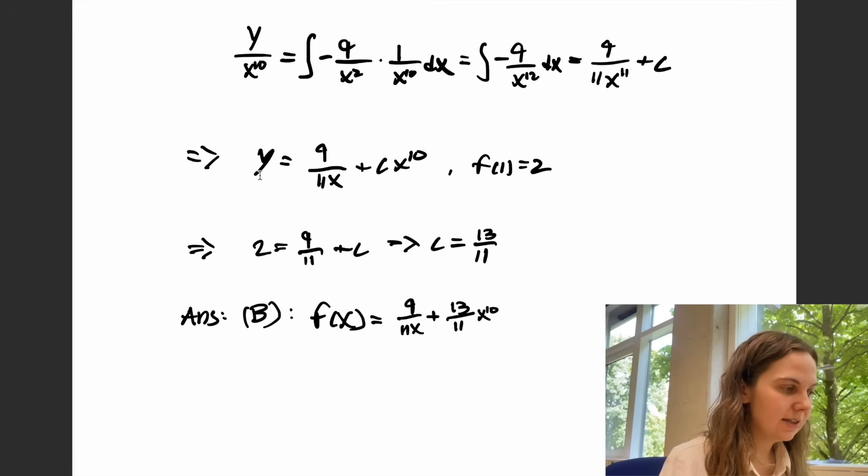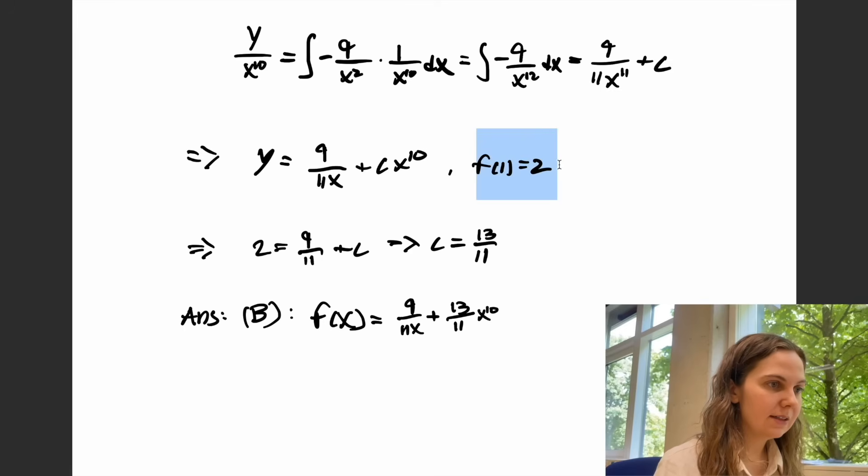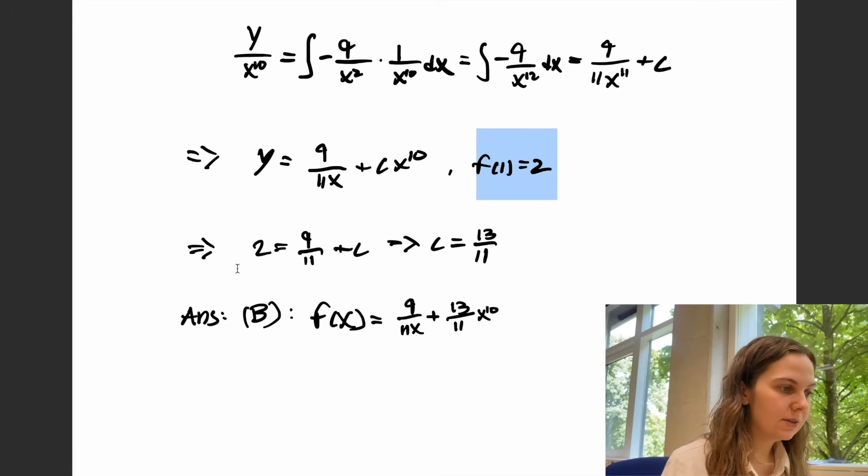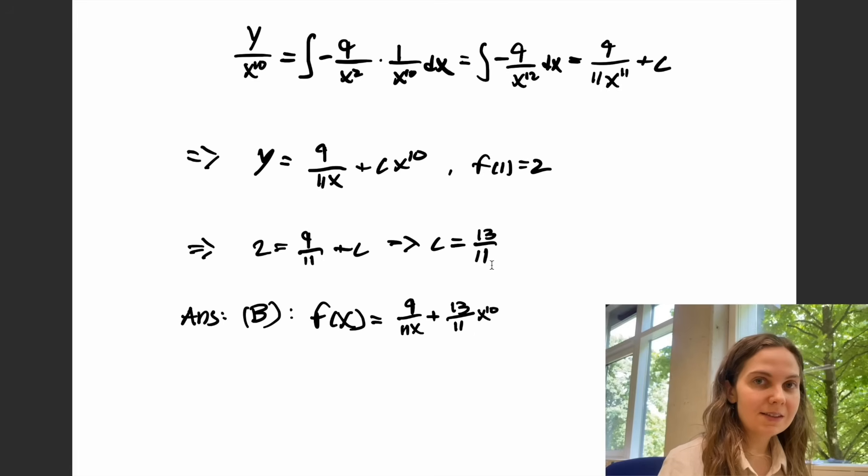We can work out that the final expression for y is 9 over 11 times x plus c times x to the power of 10. And also since we were given at the start of this question that f(1) is equal to 2 we can plug this in to work out what our integrating constant c is. And we find that c is equal to 13 over 11 which gives us that the final expression for y is 9 over 11 x plus 13 over 11 x to the power of 10 which means that the answer to question 1 is b.